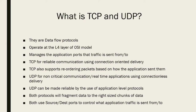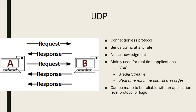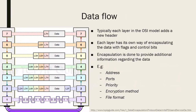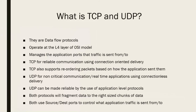So from a really high level, what is TCP and what is UDP? They are data flow protocols. As I mentioned, you have Layer 4, which sits between the OS or the application and the network portions — layers three, two and one. It's all really focused around the flow of data from the application onto the network.